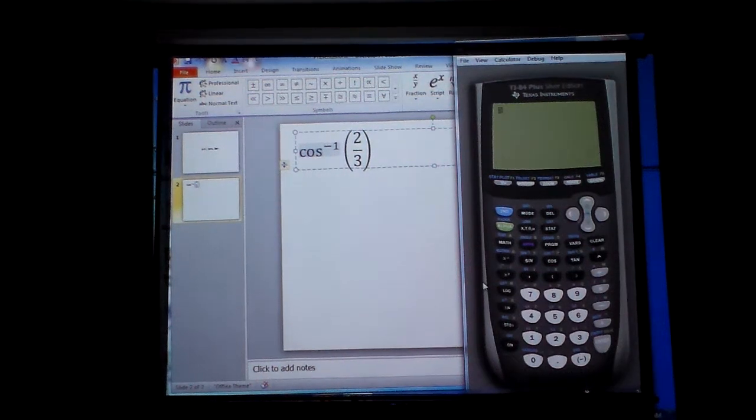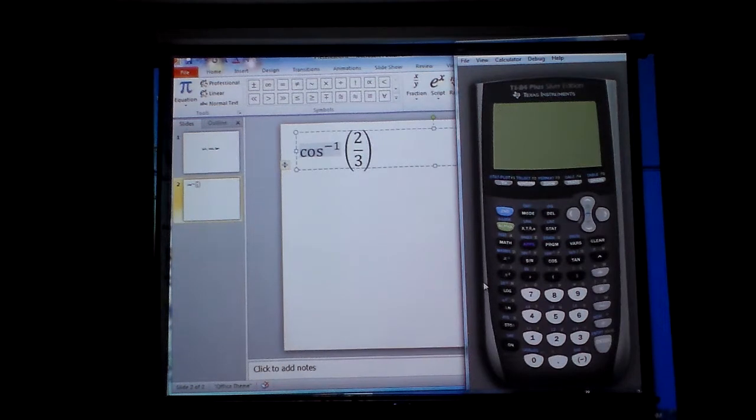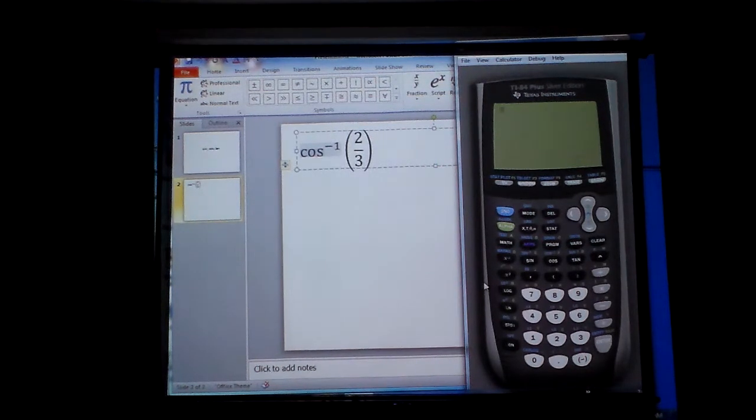Suppose I'm wanting to find the angle. They've given me the adjacent side and the hypotenuse. They say the adjacent side is 2 and the hypotenuse is 3, creating the ratio 2 thirds.